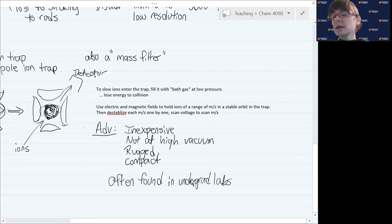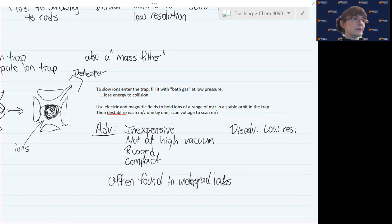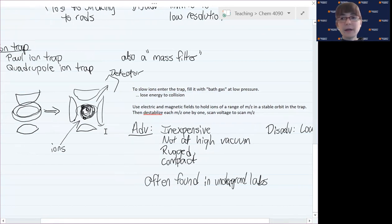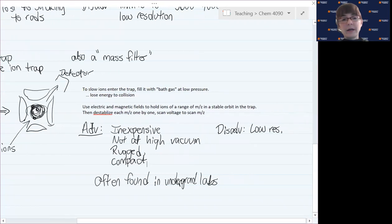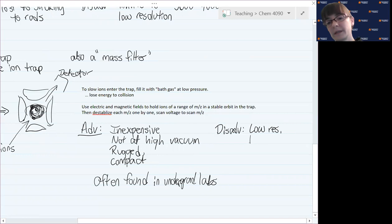What are some disadvantages similarly to the quadrupole that we discussed above? You might expect this will also have low resolution because we can only destabilize with so much specificity. One thing to note about the ion trap is we only store the ions for a limited period of time. If you try to hold too many ions at once, you're going to run out of space. So there's actually a limit on how much sample can be processed at a time, a limit on sample size in terms of how many molecules at a time.